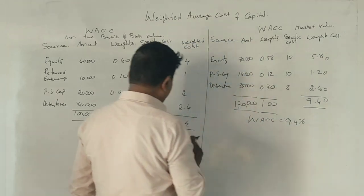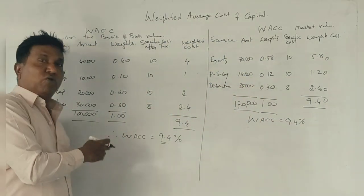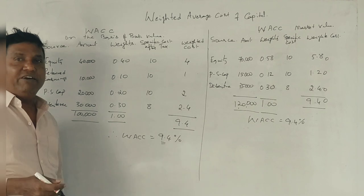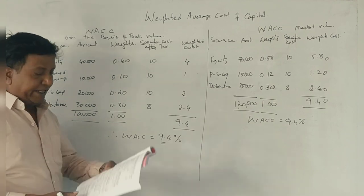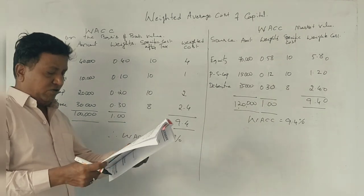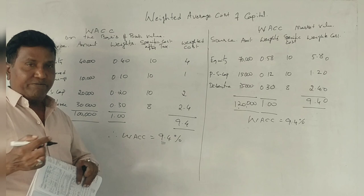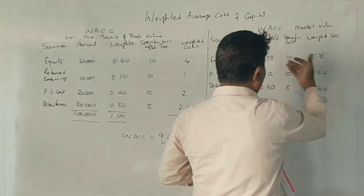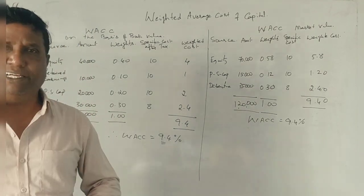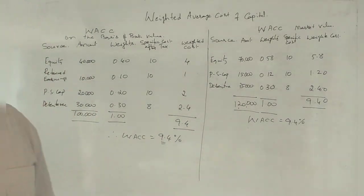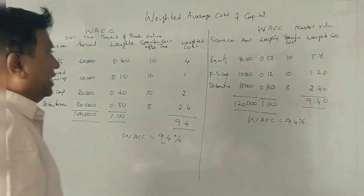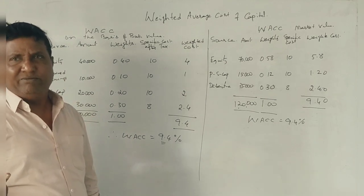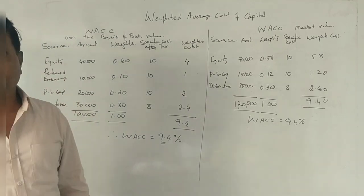So in this problem, whether we use book value or market value, the weighted average cost of capital comes out the same. The change in weights between the two methods does not alter the final result in this case, though the fractions differ between the two approaches.